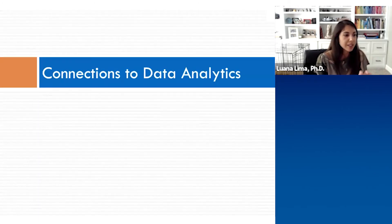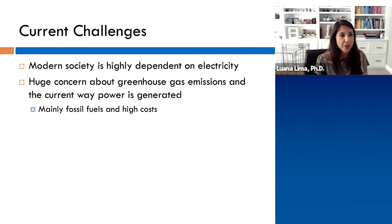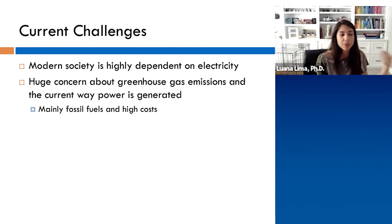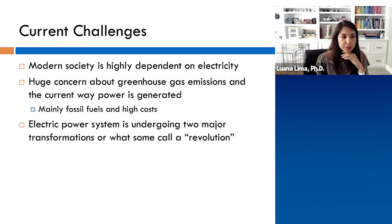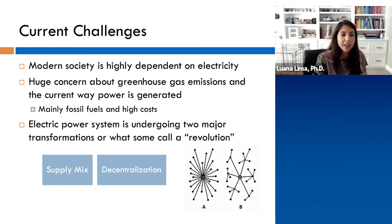Now connecting to data analytics and electricity markets: some current challenges — we are highly dependent on electricity. Think about the pandemic last year; electricity is what kept us working and connected. There is also a huge concern about greenhouse gas emissions, because most power is still generated by fossil fuels. The electric power system is undergoing a major revolution on the supply mix side, shifting to more renewables, and on the decentralization side — more distributed energy resources and behind-the-meter generation — introducing new agents to the market.